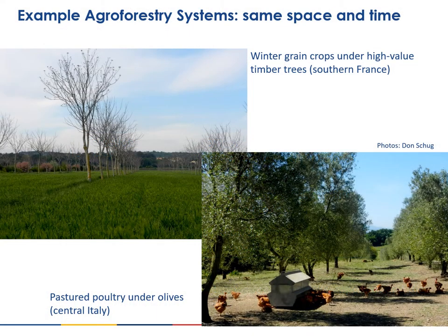Here are some examples of agroforestry systems that integrate in both space and time. The top photo in southern France shows winter grain crops grown between rows of high value timber trees. In the other photo you will see poultry pastured under olive trees in central Italy.